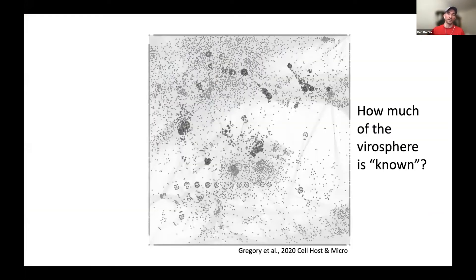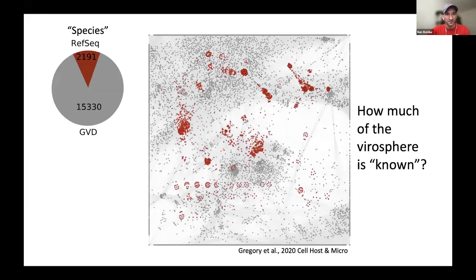The first question I want to pose is: how much of the virome is really known? Here is a figure from the gut virome database paper. One would expect the gut virome to be somewhat well studied. Each dot here is a virus, and the little connections between them show some sort of relationship. There are 17,000 dots in front of you right now. Looking at the species level, there are only about 2,200 RefSeq genomes in this network, but over 15,000 viral populations that seemingly have no hit to RefSeq.